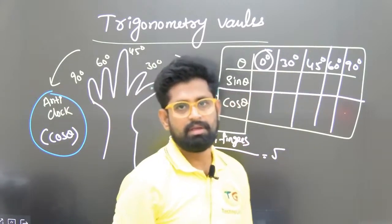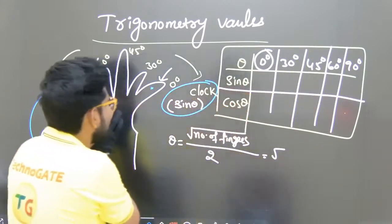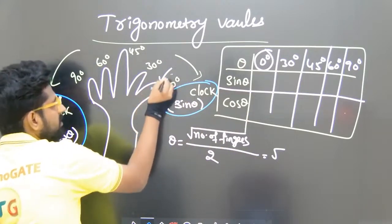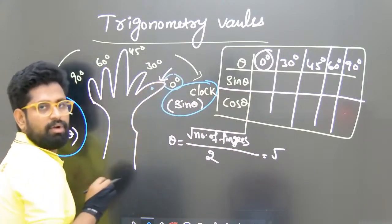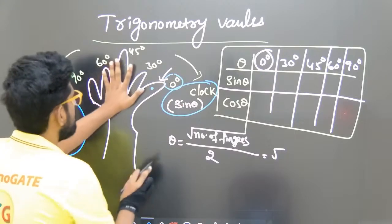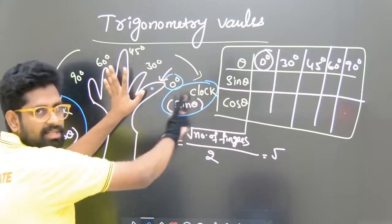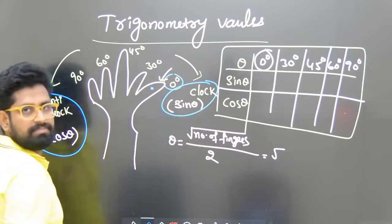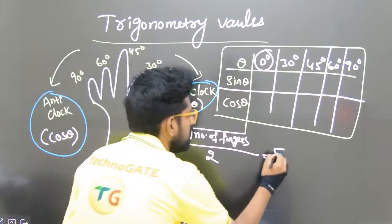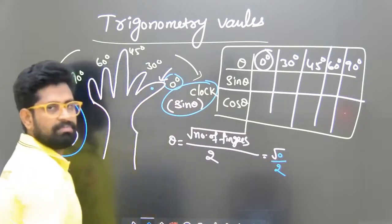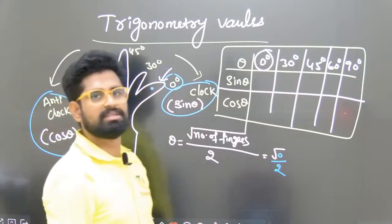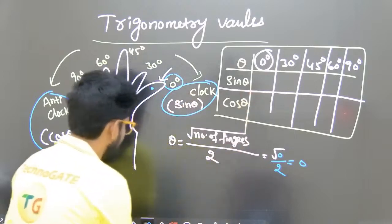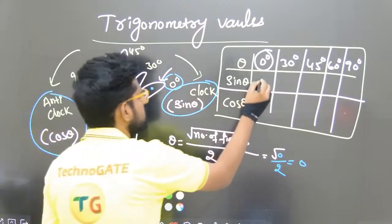Now I am looking in the clockwise direction. My pointer is at 0 degrees. On this side of the hand there are no fingers, so root 0 by 2, which gives us 0. So sin 0° = 0.